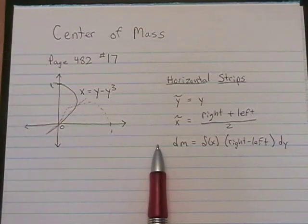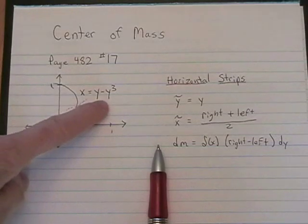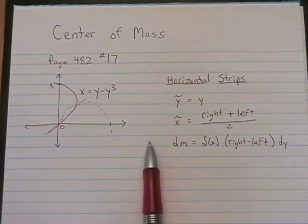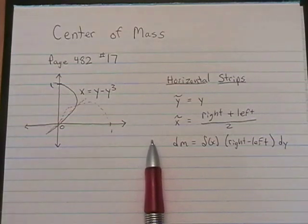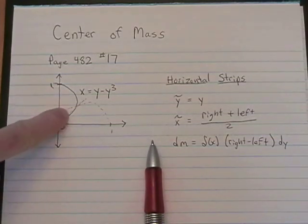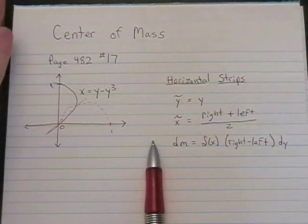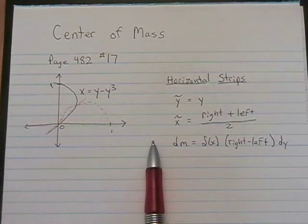We're asked to find the center of mass of x equals y minus y cubed. To get a graph of x equals y minus y cubed, which is actually not a function because it doesn't pass the vertical line test, you go ahead on your graphing calculator and graph y equals x minus x cubed, which I've shown here in a dashed line in red, and then you reflect it across the line y equals x.